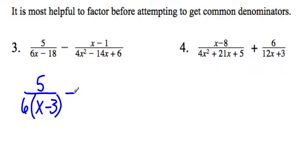On the second fraction, x minus 1 can't be factored. Let's see, I can at least take out a 2. That leaves me with 2x squared minus 7x plus 3.